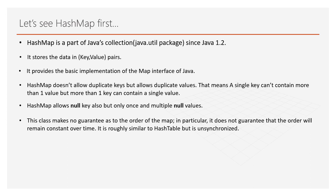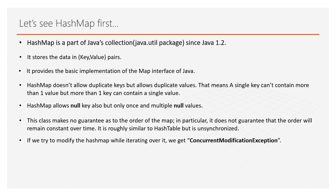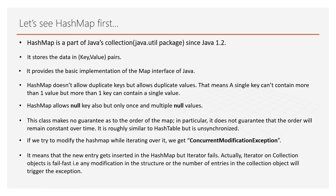HashMap makes no guarantee as to the order of the map — it does not guarantee that the order will remain constant over time. It is unsynchronized. If we try to modify the HashMap while iterating over it, we get a ConcurrentModificationException, because the iterator on collection objects is fail-fast. Any modification in the structure or number of entries will trigger the exception.